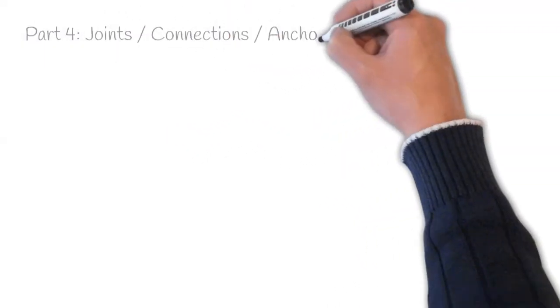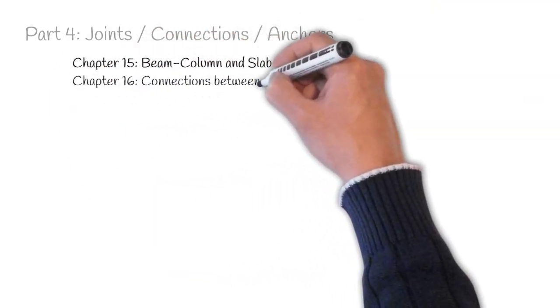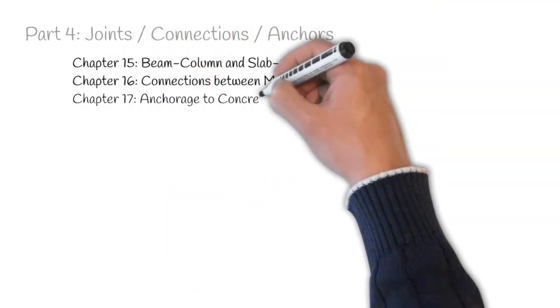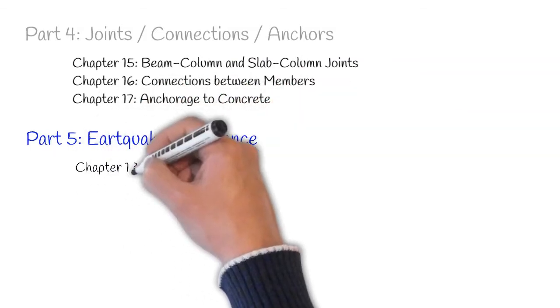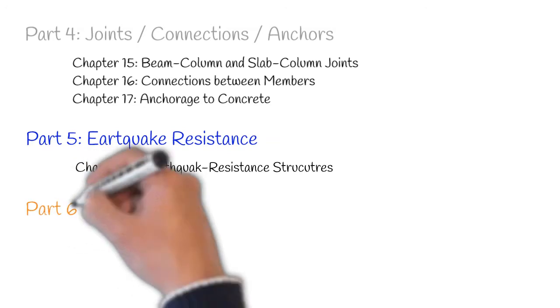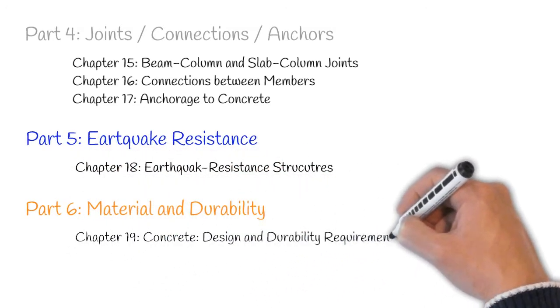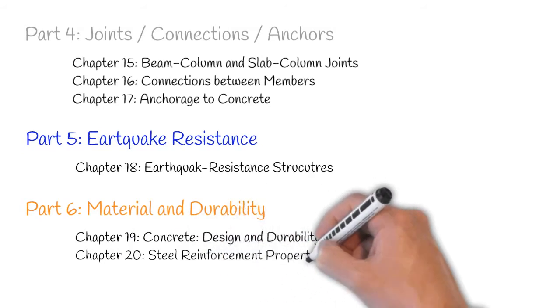Part 4 includes Chapters 15 to 17: beam-column and slab-column joints, connections between members and anchorage to concrete. Part 5 includes Chapter 18 and is devoted for seismic design provisions. All the requirements for concrete and steel materials and their durability are included in Chapters 19 and 20 of Part 6.